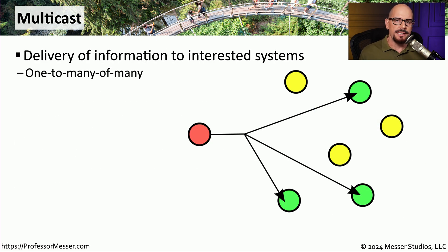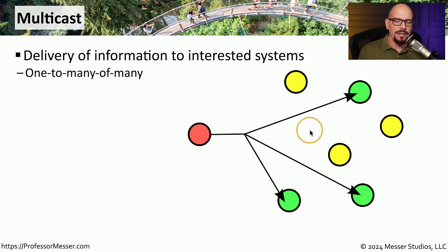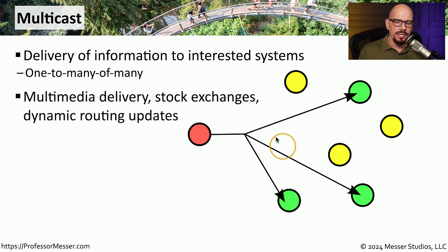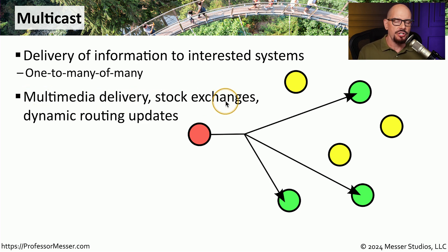To be able to efficiently send data to multiple devices at the same time, then you'll probably want to use multicast. Multicast is a one-to-many communication, so when you send information out, it is sent to multiple recipients all simultaneously. These recipients are usually subscribing to your multicast feed. So if someone is trying to receive multimedia, stock exchange information, or maybe a device is sending out routing updates, it can send those out via multicast addresses.